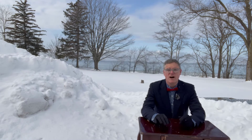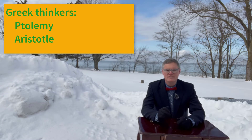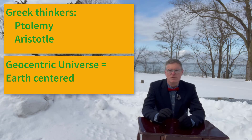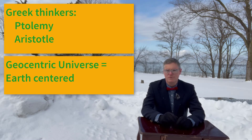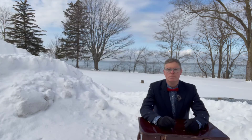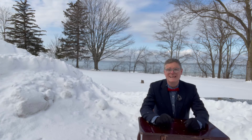An example of the shift in thinking is illustrated in the understanding of the makeup of the universe. Ancient Greek writers Ptolemy and Aristotle taught that the earth was at the center of the universe — the Sun, stars, planets, and everything else revolved around the earth. This is called the geocentric universe theory, 'geo' being a prefix meaning earth and 'centric' being a suffix meaning center.